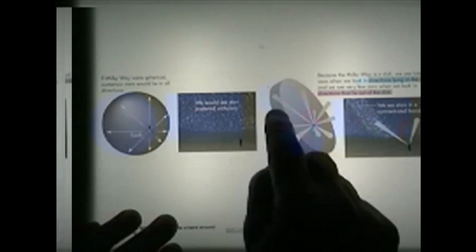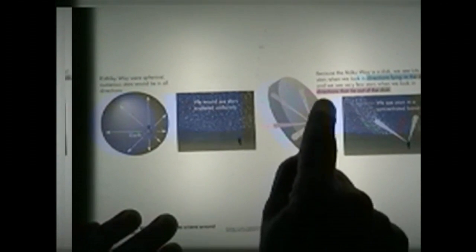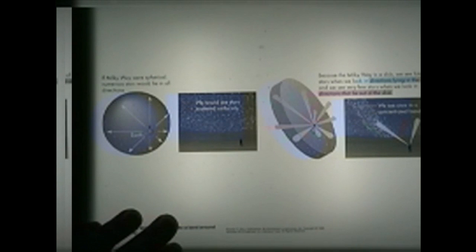If you look in the plane of the disc, you see many stars. If you look out of the plane, you see a far less number of stars.